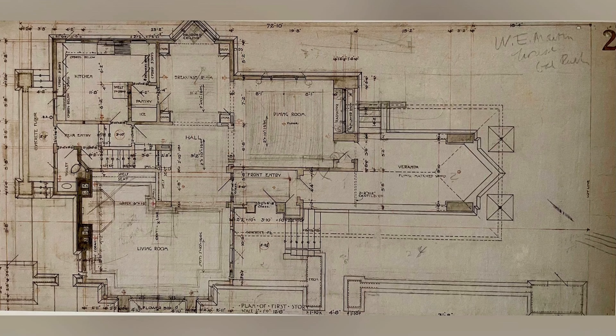Moving up to the first floor, we find the heart of the home. Wright's design philosophy of open, flowing spaces is beautifully demonstrated here. The entry hall seamlessly connects to the living room, dining room, and breakfast nook. Originally, the dining room was converted into a library, with a new dining area extended across the back of the house, opening directly onto the lawn and garden — enhancing the connection to the outdoors, a key element in prairie-style architecture.